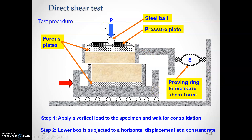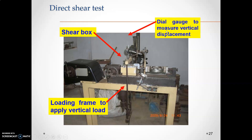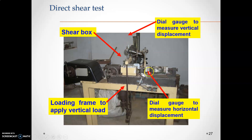Once load is applied, there will be loading both vertically and horizontally — this is normal load and this is shear load. There will be a failure with sliding. Once failure occurs, you note down the readings: the maximum normal load and the maximum shear load. The proving ring stops showing increasing readings at failure. The setup includes a shear box, a loading frame to apply vertical load, dial gauges to measure vertical and horizontal displacement, and a proving ring to measure shear force.